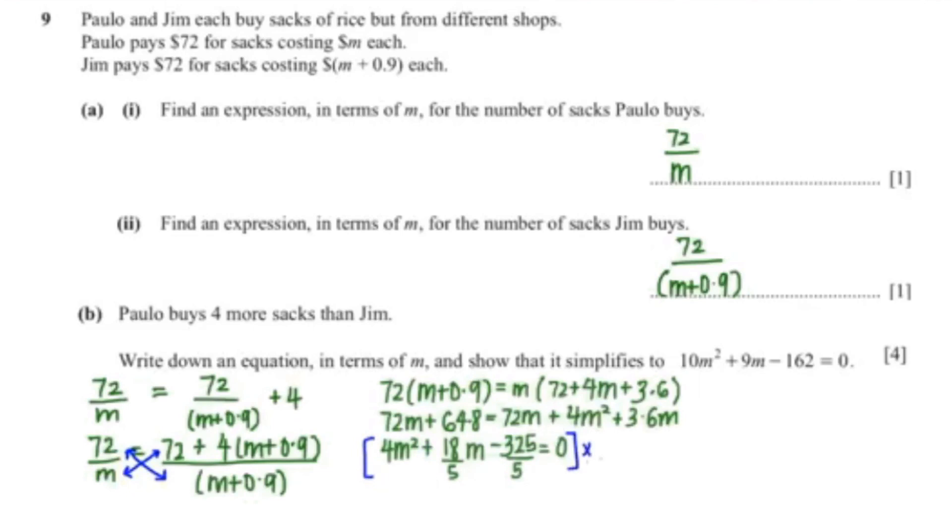So that is 18 over 5M minus 64.8 which is 324 over 5 equals to 0. Now we're going to multiply this whole thing by 5 to get rid of the fraction. So that would be 20M squared plus 18M minus 324 equals to 0. So that would be 20M squared plus 9M minus 162 equals to 0.